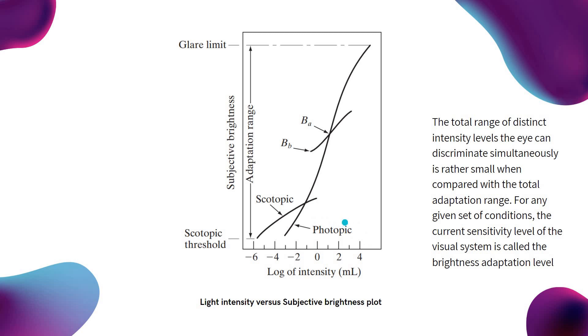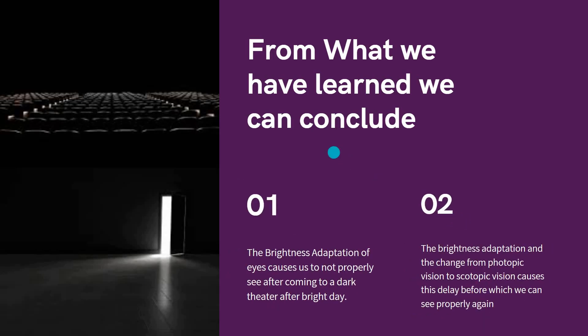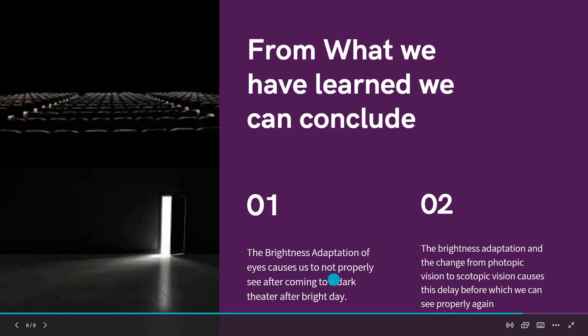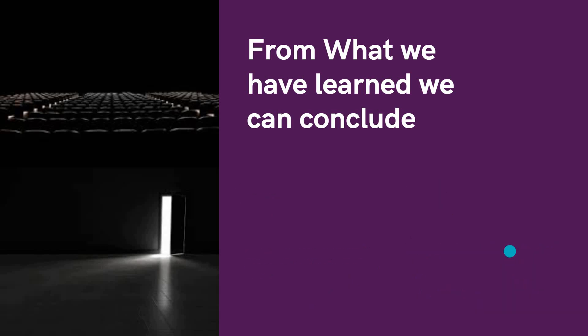In photopic vision you are using cones, while in scotopic vision you are using rods. So, from what we have learned today, brightness adaptation of the eyes causes us to not see properly after coming into a dark theater. This brightness adaptation also involves a change from photopic vision to scotopic vision. The delay we perceive when entering a dark theater is the time it takes our eyes to adapt from one intensity level to another. Thank you.